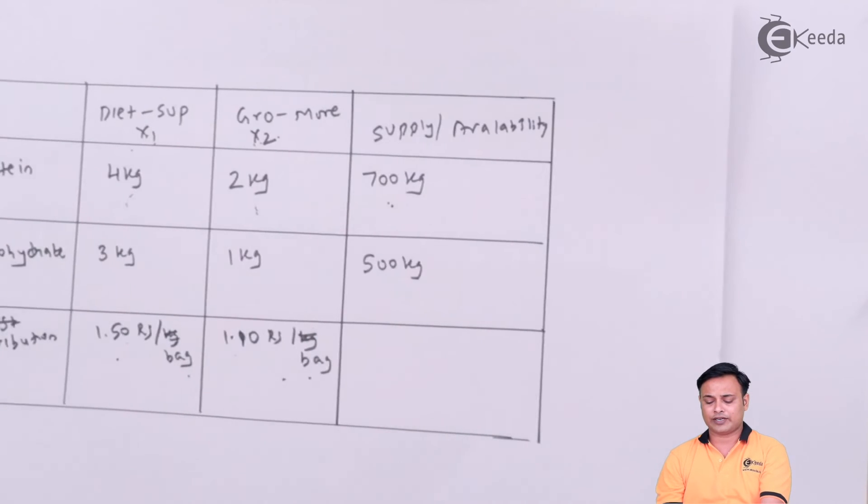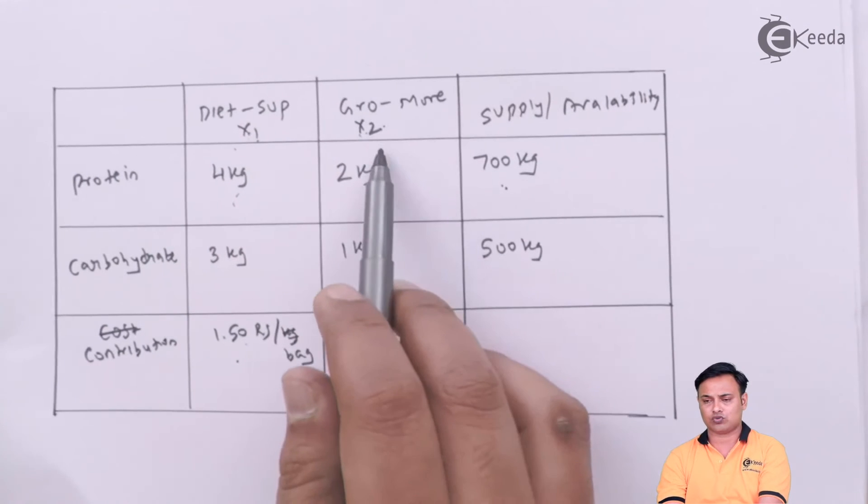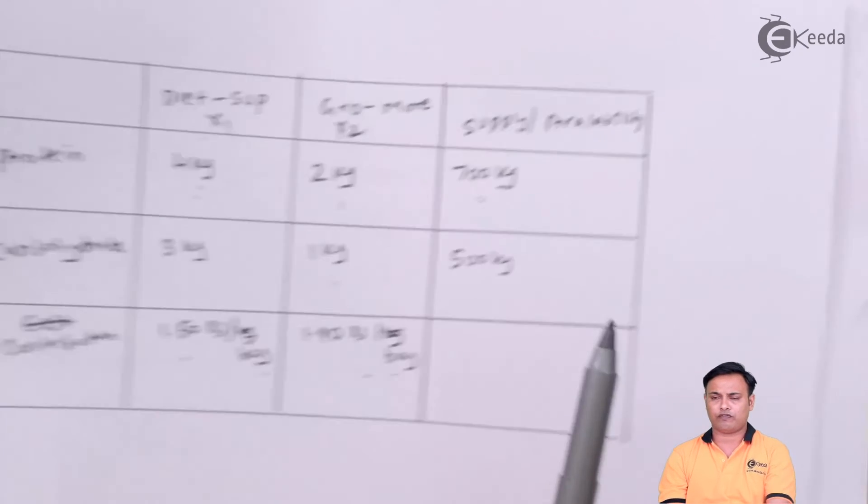And for carbohydrates it shall be 3x1 plus 1x2 less than or equal to 500 kg.